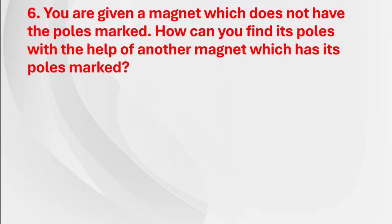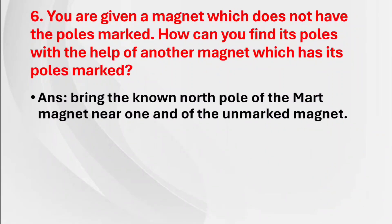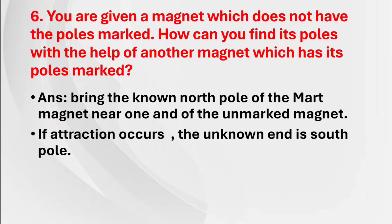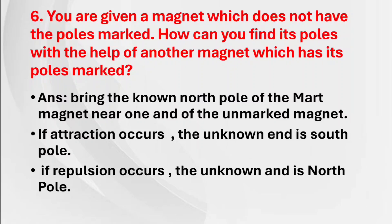Sixth question: You are given a magnet which does not have the poles marked. How can you find its poles without the help of another magnet which has its poles marked? Answer: Bring the known north pole of the marked magnet near one end of the unmarked magnet. If attraction occurs, the unknown end is the south pole. If repulsion occurs, the unknown end is the north pole.